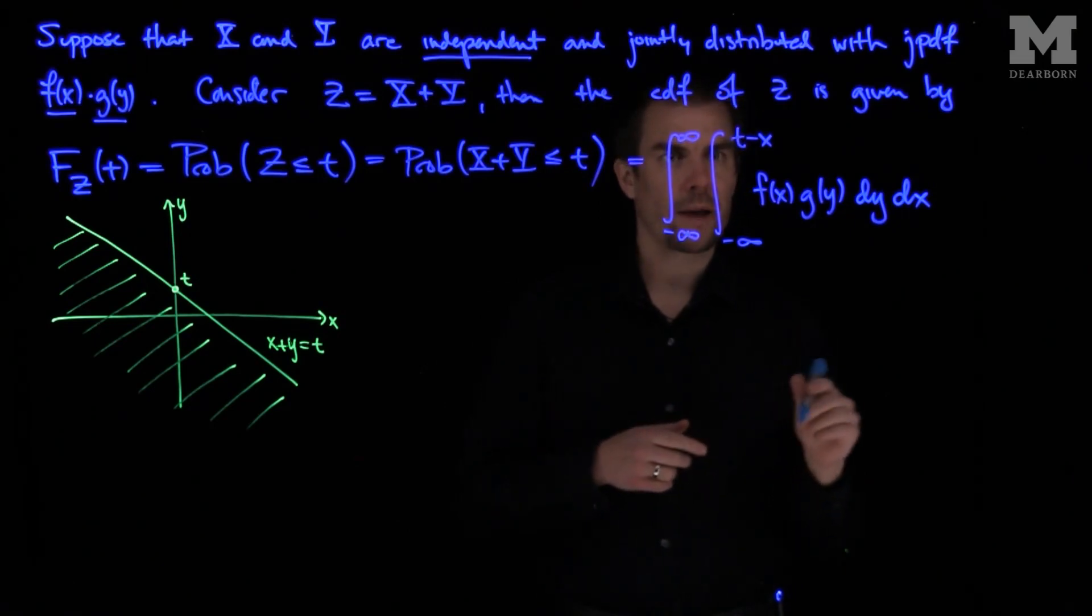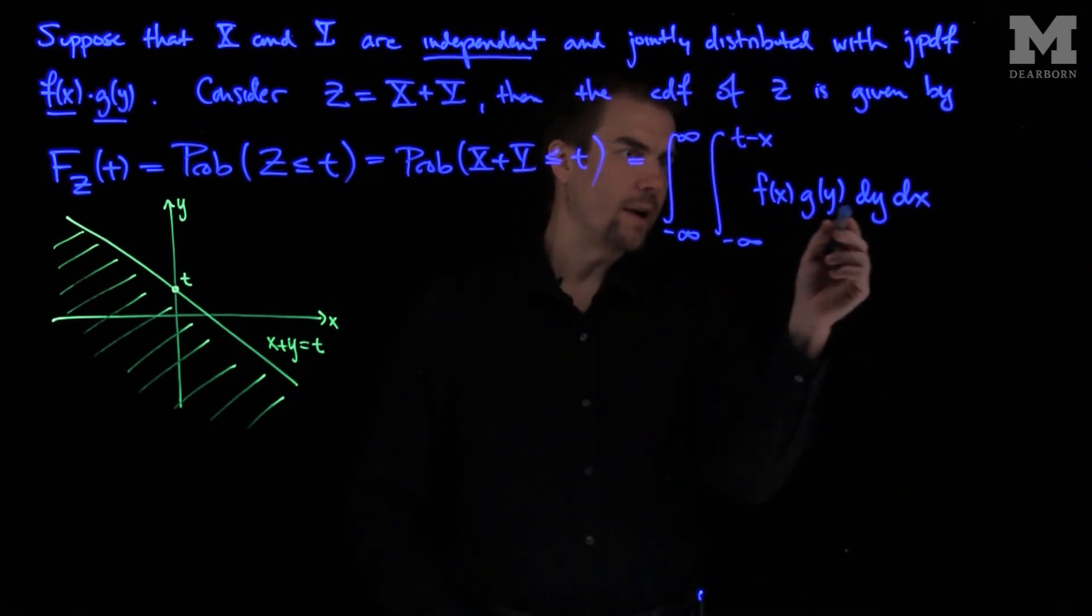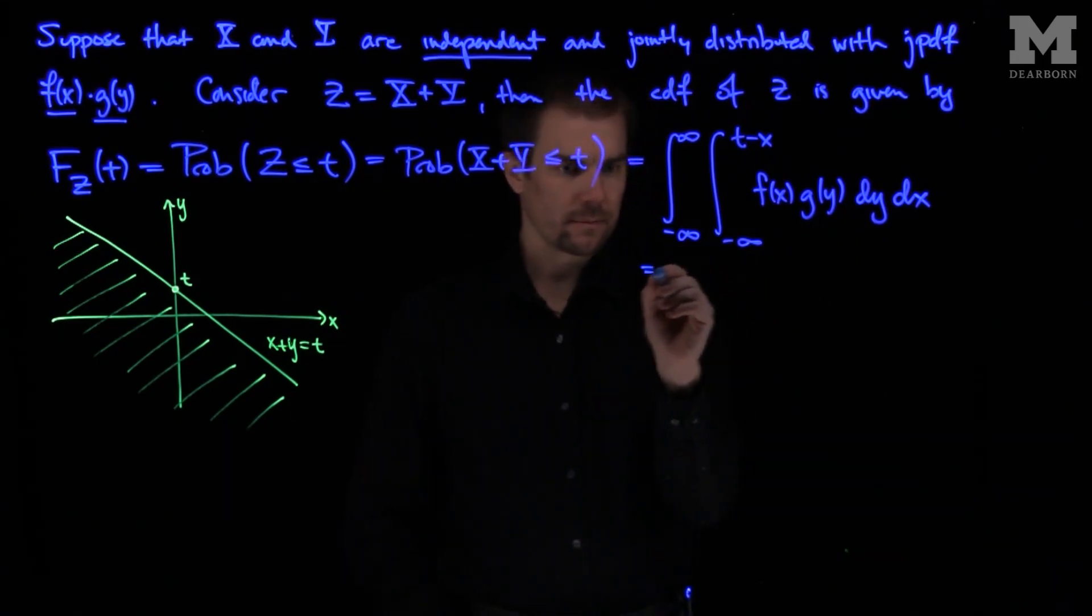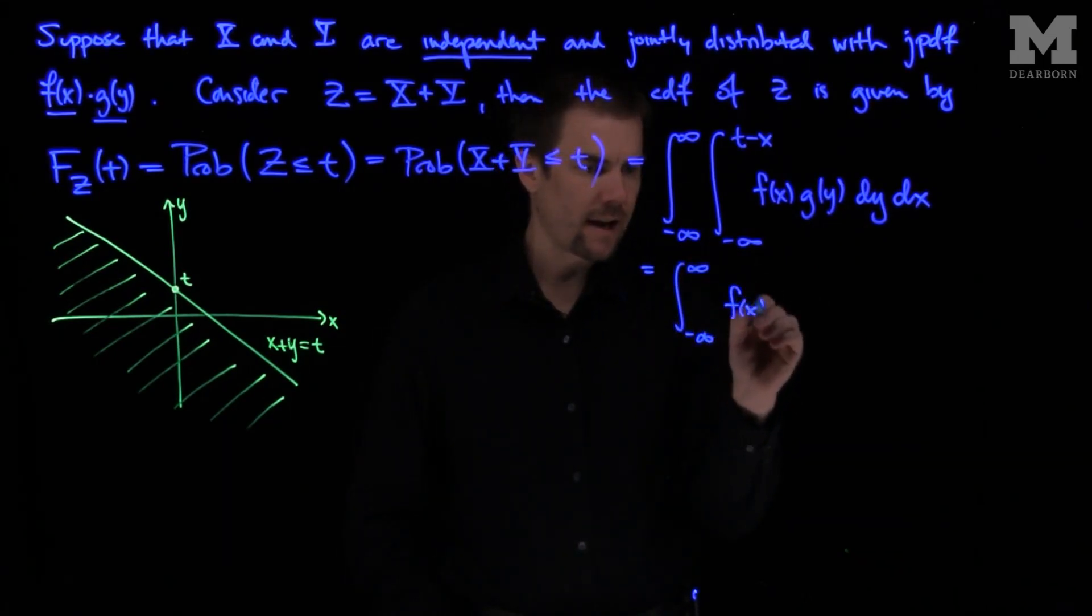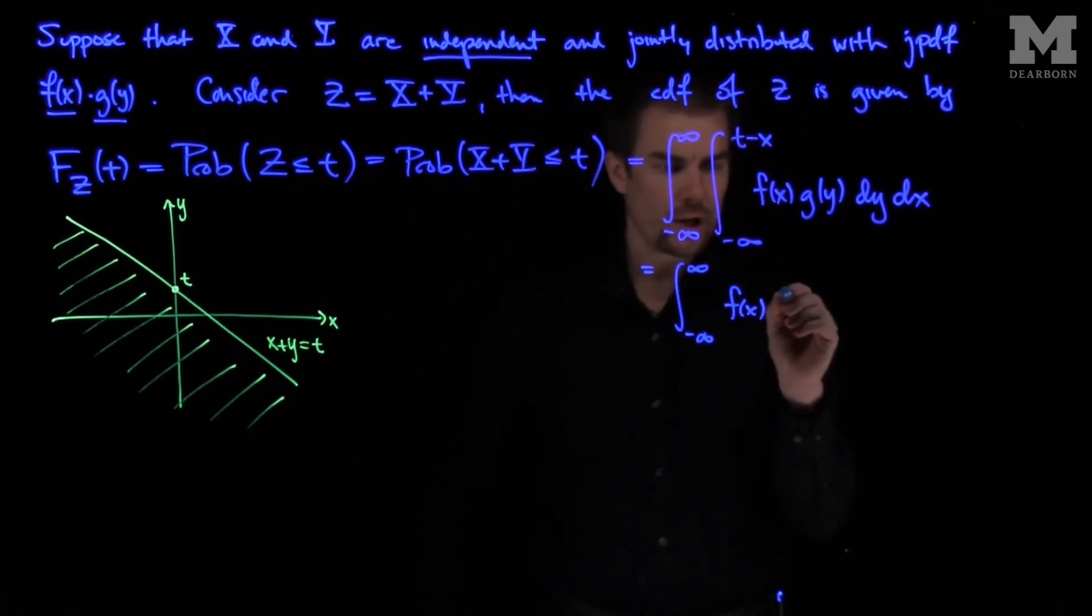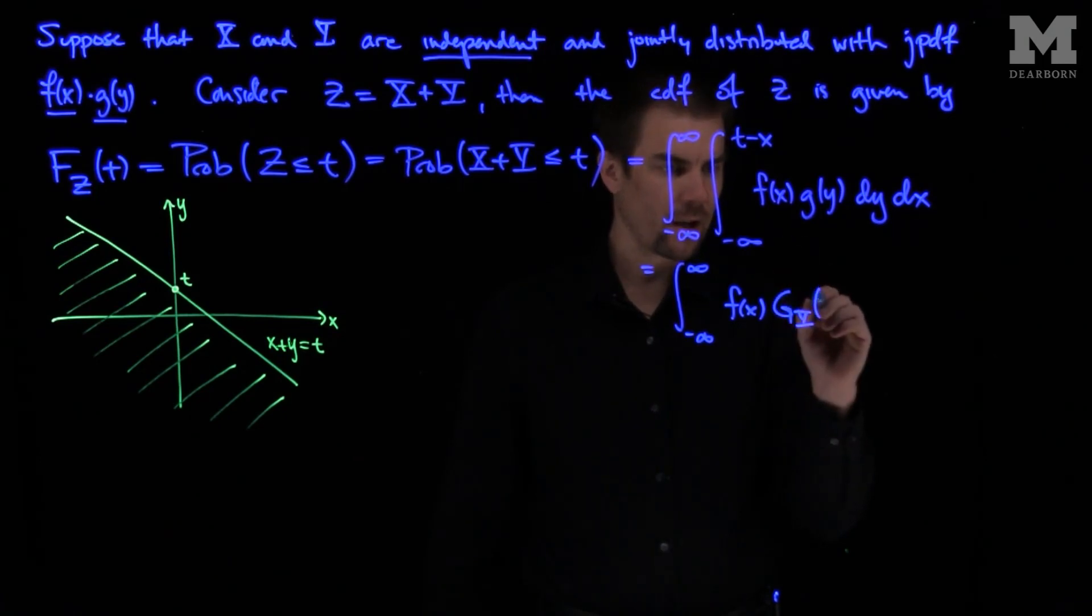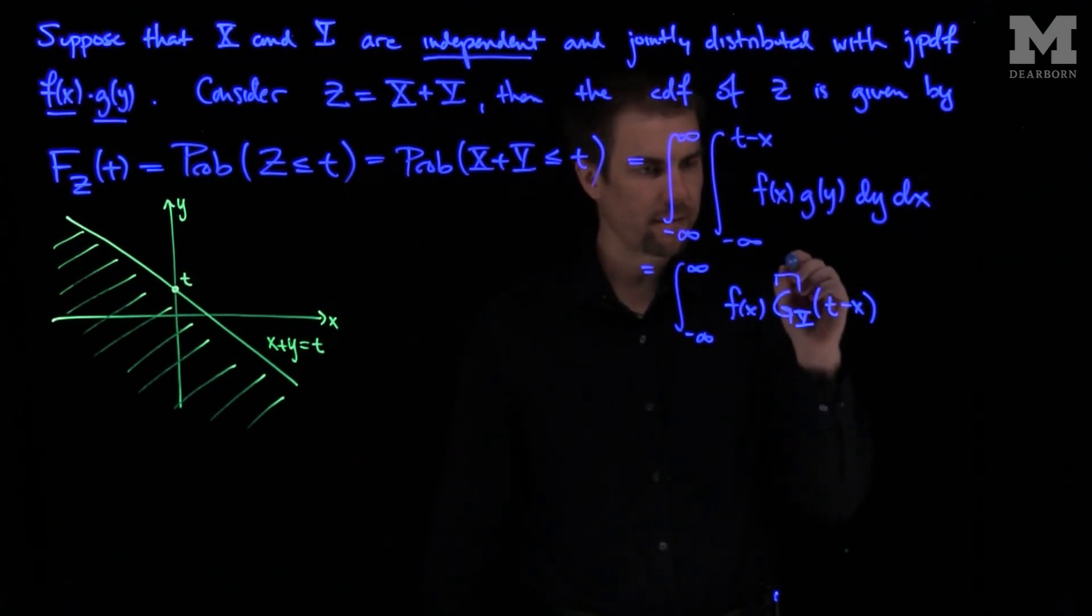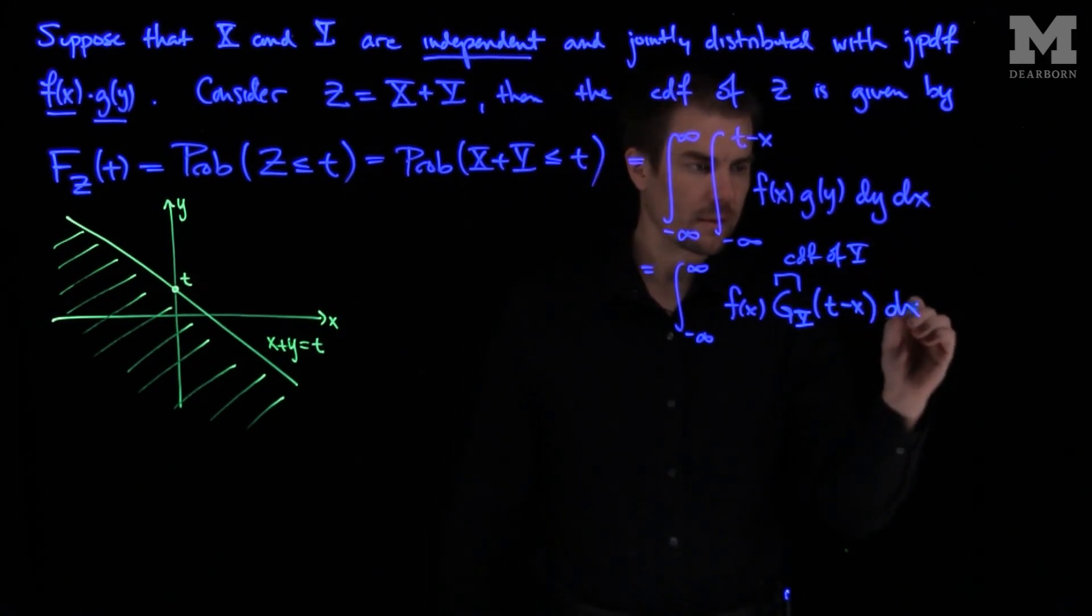Now we can observe that we can write this in terms of the integral of y, of g of y dy, which is really the integral from negative infinity to infinity of f of x, and then this will be G capital Y evaluated at t minus x, where that is the CDF of Y, dx.